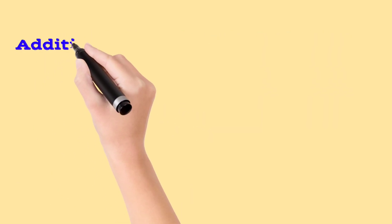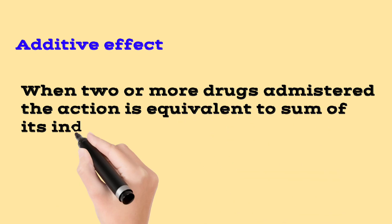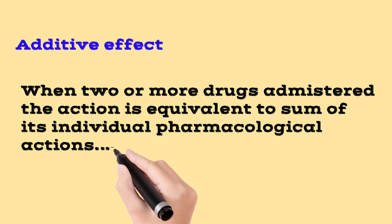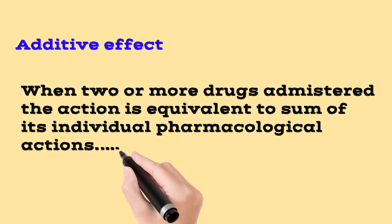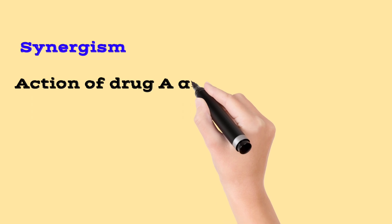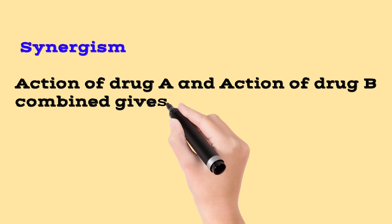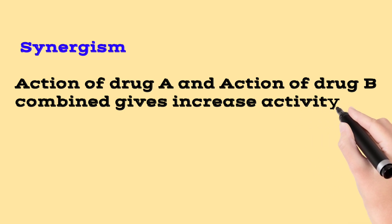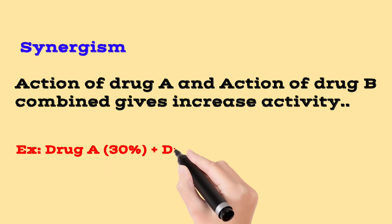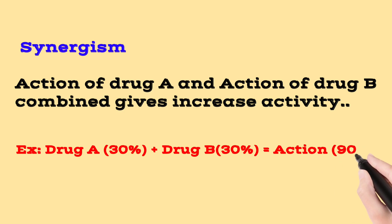When two drugs are combined and their individual actions add together, this is called an additive effect — the combined action equals the sum of each individually. Next is synergism: the action of drug A and drug B together is greater than the sum of each individually. For example, when two drugs are combined, the combined activity may be 90%, which is greater than individual actions — that is synergism.